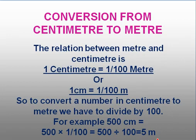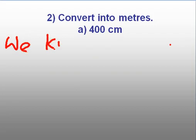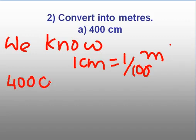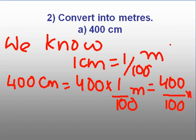Let us do some questions to understand this. Convert into meters: 400 centimeters. Now you have to convert centimeters to meters, and for that you will first write: we know 1 centimeter is equal to 1 by 100 meter. So, 400 centimeters is equal to 400 into 1 by 100 meters. That is 400 by 100 meters. Now, 100 fours are 400, so the answer is 4 meters.